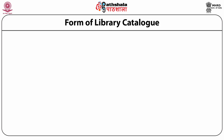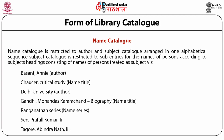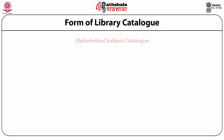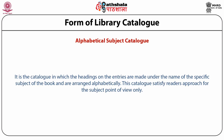The second type of alphabetical catalog is the name catalog. The name catalog is restricted to author and subject entries arranged in one alphabetical sequence, where the subject catalog is restricted to entries for the names of persons treated as subject headings. The alphabetical subject catalog is the catalog in which headings on entries are made under the name of the specific subject of the book and are arranged alphabetically. This catalog satisfies readers' approach from a subject point of view only.